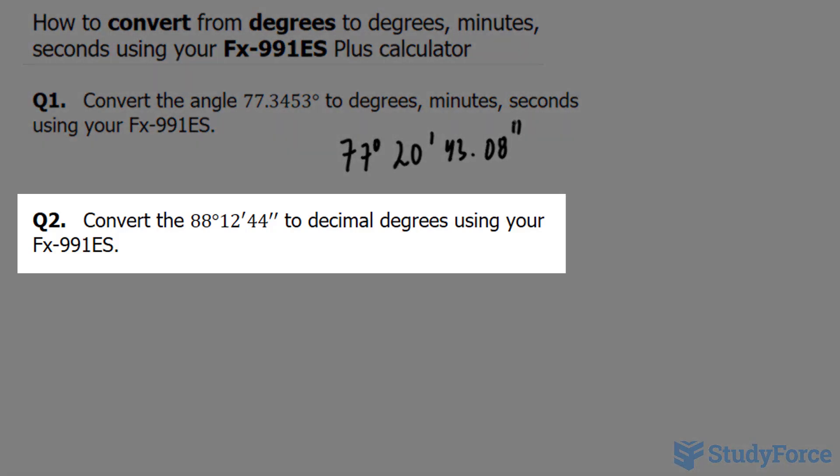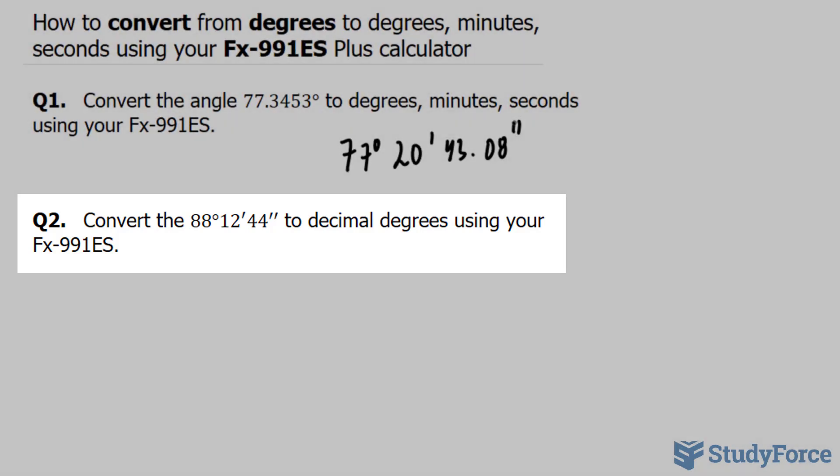In question two, they ask us to convert 88 degrees, 12 minutes, and 44 seconds to decimal degrees using the calculator.